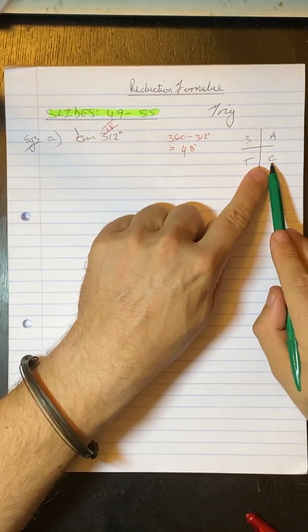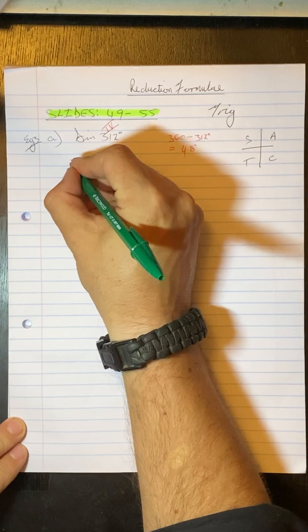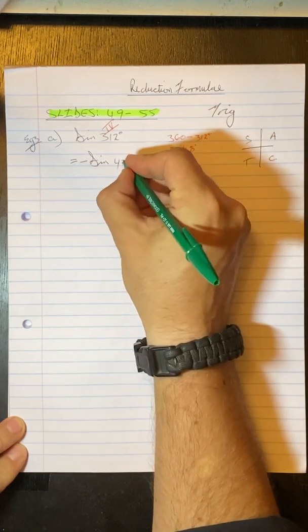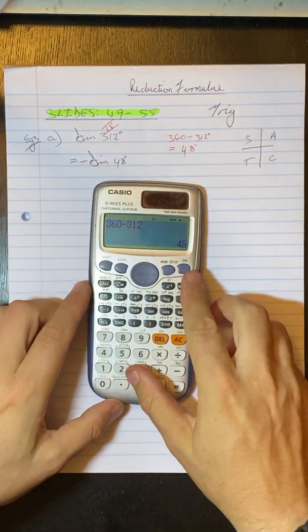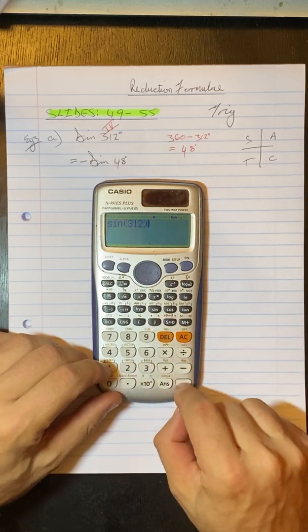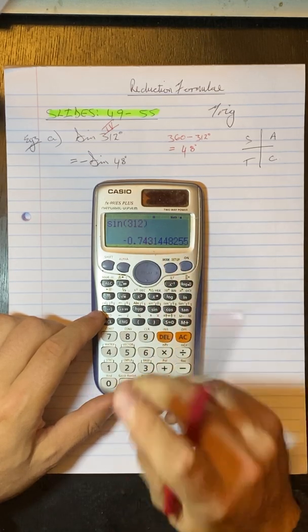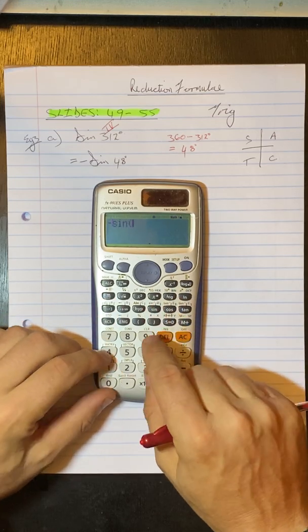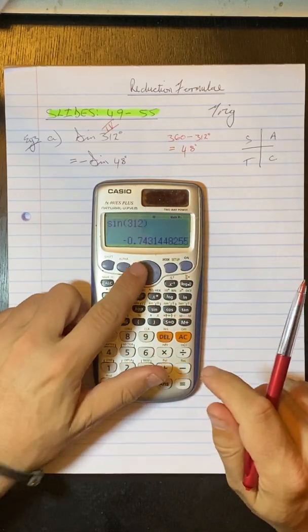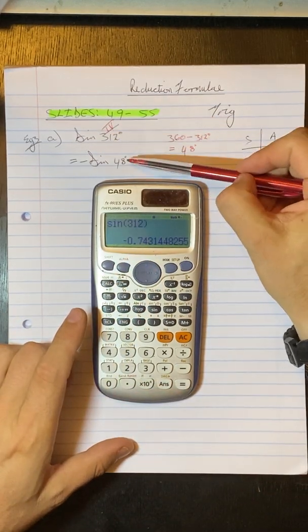Second of all like I said we know we're in the fourth quadrant. So we know that this sine is going to be negative. So this is going to be negative sine and we can reduce that angle to 48. And we have reduced it to an acute angle. So if you have a look here grade 11s I'm just going to check what sine 312 is. And we get this negative 0.74 and so on. Okay if I check this one now minus sine 48 I get exactly the same answer as you can see there. Okay so we've reduced a bigger angle to an acute angle.